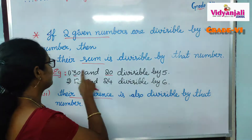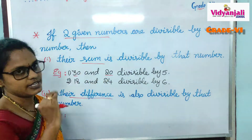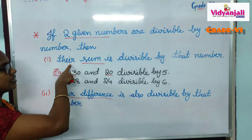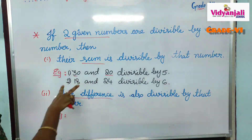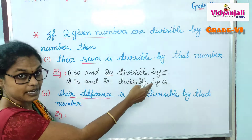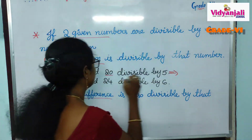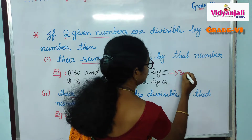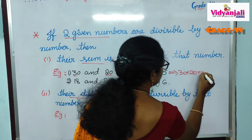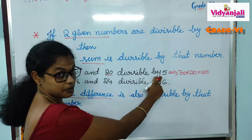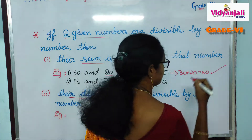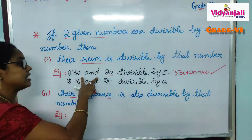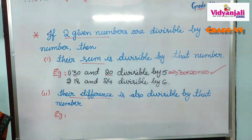So 30 and 20 are both divisible by 5. According to this rule, their sum should also be divisible by 5. What is 30 plus 20? It is 50. Is 50 divisible by 5? Yes. So if two numbers are divisible by any number, their sum is also divisible by that number.